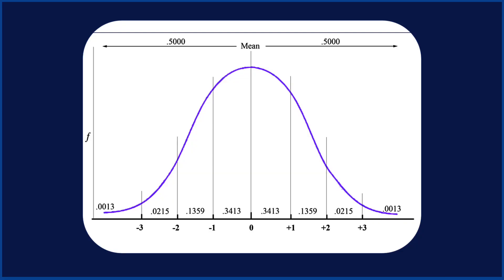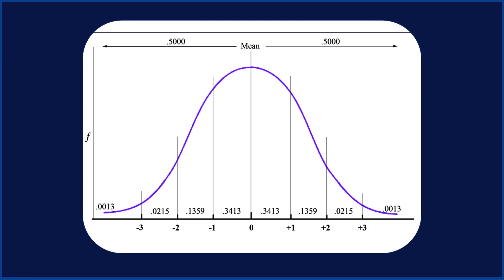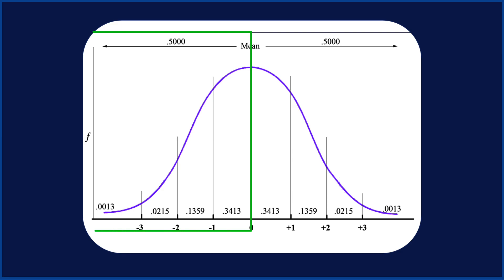This is a picture of a standard normal distribution. We can see that it has a mean of zero right there in the middle, and a standard deviation of one. We can see positive one standard deviation to the right, positive two and positive three. To the left, negative one, negative two, and negative three. Because a standard normal curve is symmetrical, there are exactly the same number of scores from zero to positive one as there are from zero to negative one. Exactly one half of all scores will be below the mean, and the other half will be above the mean.